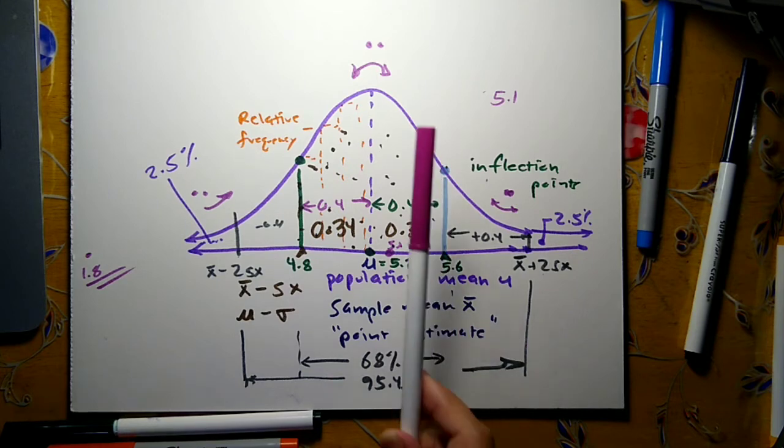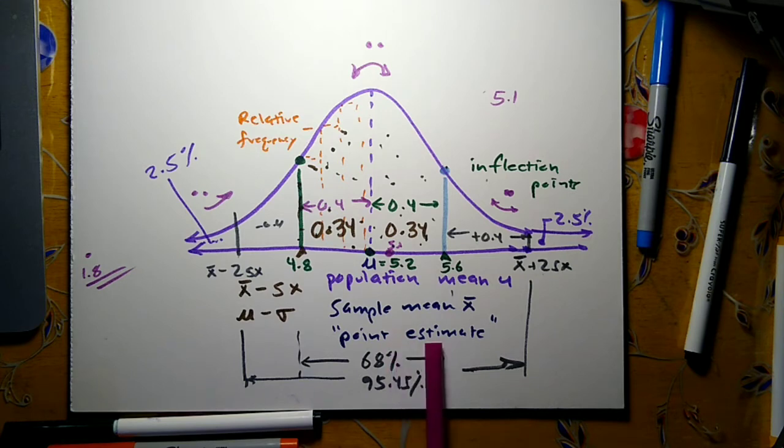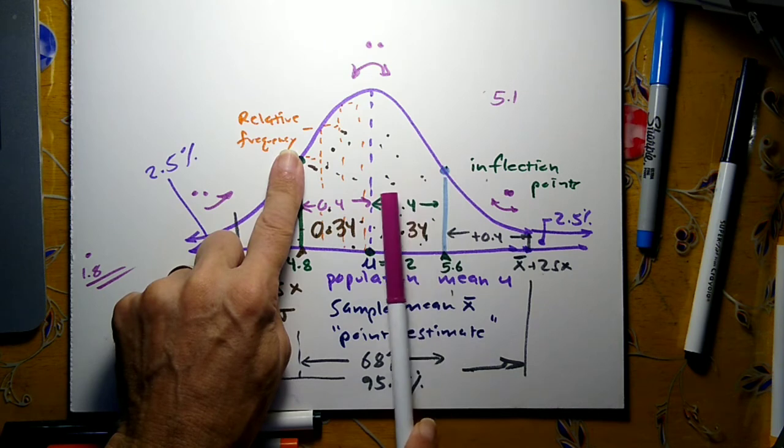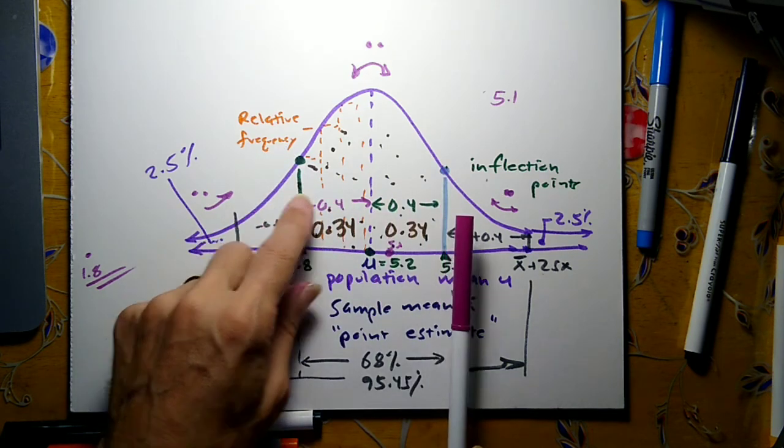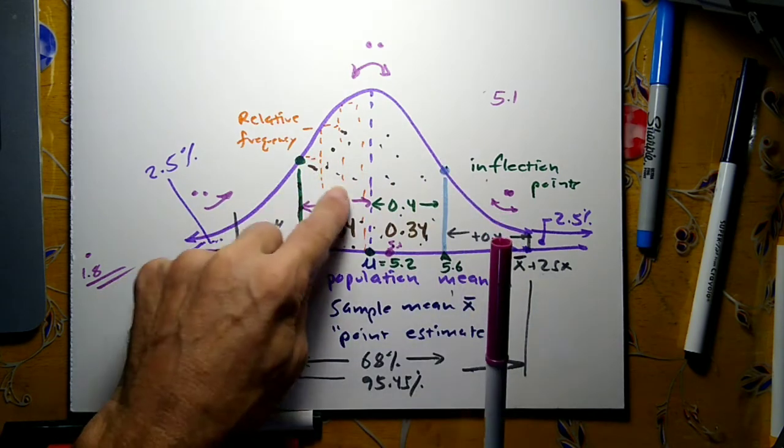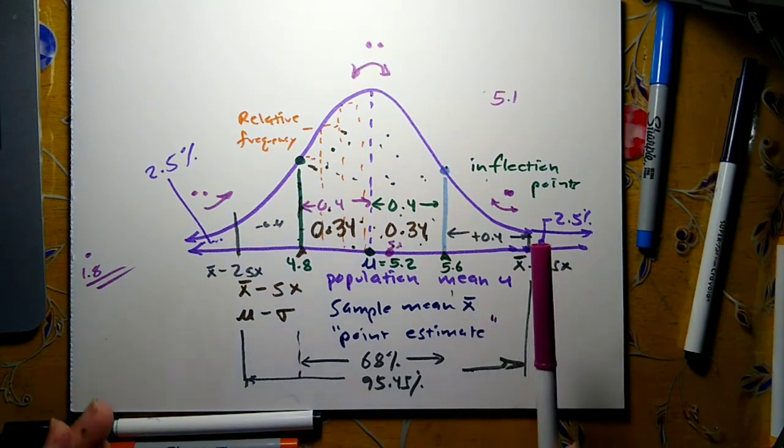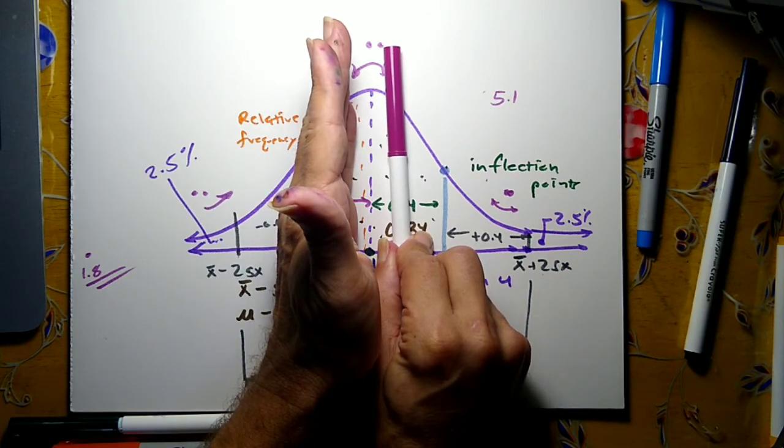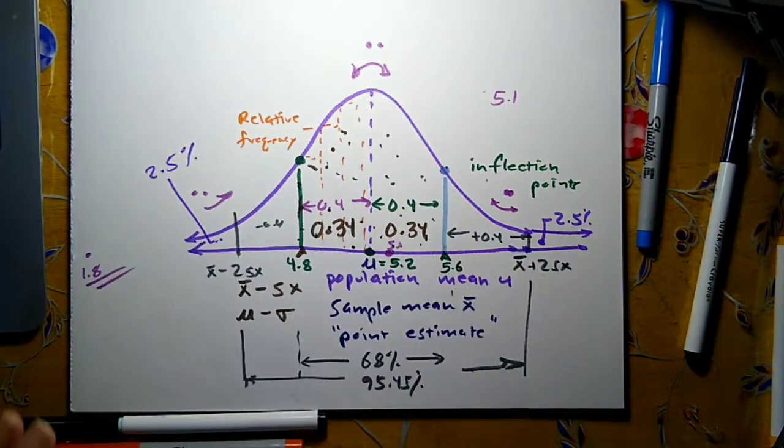So key points are: the normal curve centers on the mean for us, the sample mean, which we use as a point estimate of the population mean. And these two inflection points occur at plus and minus one standard deviation above and below the mean. So if you can figure out where those inflection points are, you can actually estimate what your standard deviation is. That also means that if the standard deviation is smaller, the normal curve will be a little narrower. If the standard deviation is larger, the normal curve will flatten out. And so you can actually get families of normal curves.